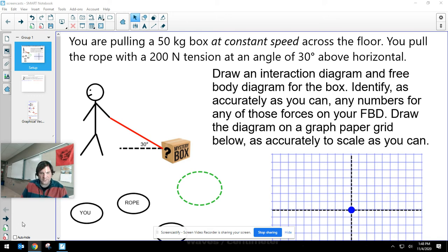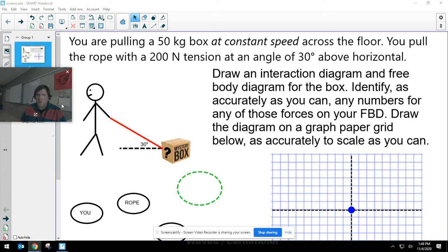Hello, I want to take a look at this situation and make an interaction diagram and a free body diagram. This is a little bit different from things we've done before in that we see there's an angle here of 30 degrees above horizontal, so our arrows are not going to be perfectly lined up along an axis.